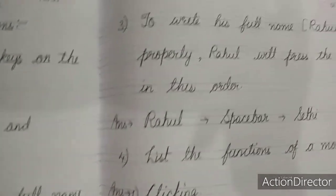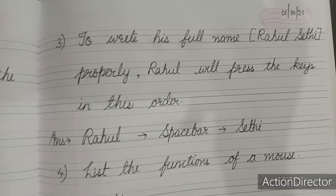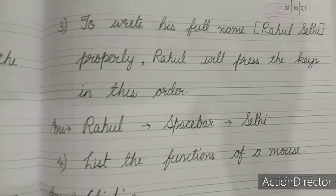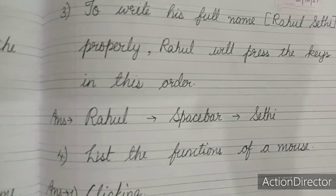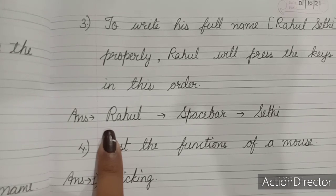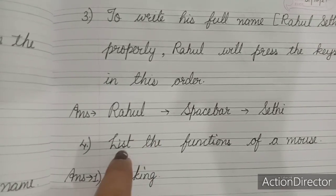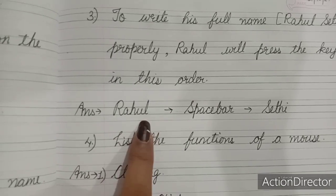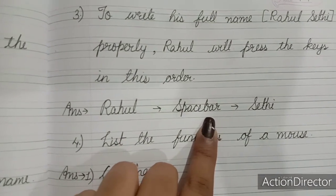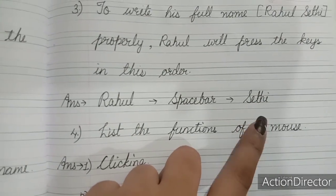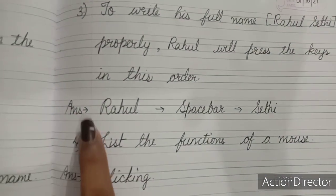Moving on to the third question: To write his full name Rahul Sethi properly, Rahul will press the keys in this order — R-A-H-U-L using alphabet keys, then the space bar, then S-E-T-H-I for Sethi. In this way he will write down his name.